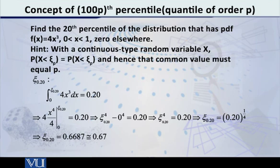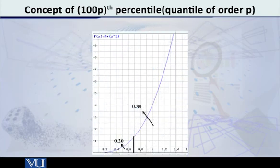And what do we finally get? We get xi 0.20 is equal to 0.20 raised to 1 by 4. And what is that equal to? That is equal to 0.67. Therefore, we conclude that for this particular density function, the shape of which is now in front of you on the screen, the 20th percentile is given by 0.67.